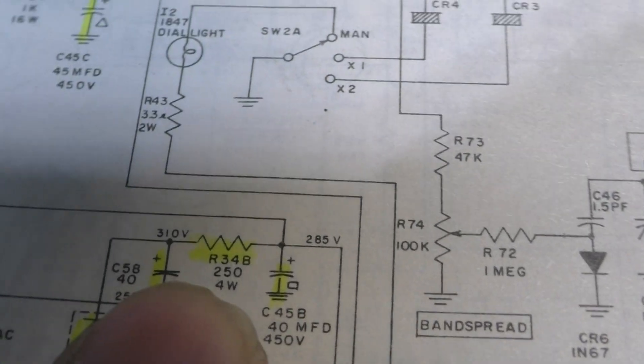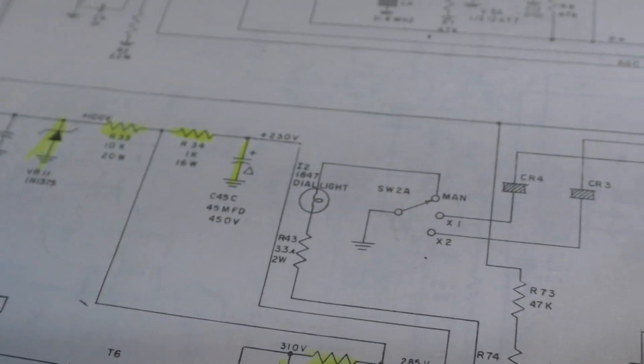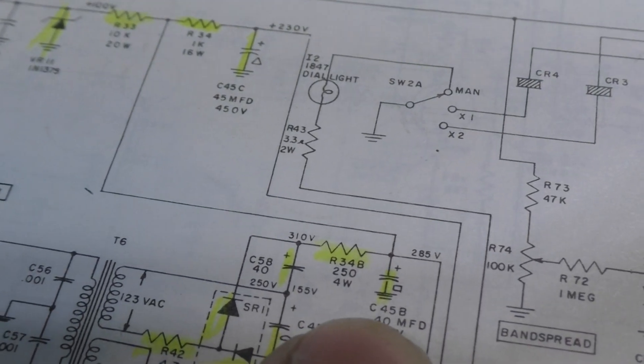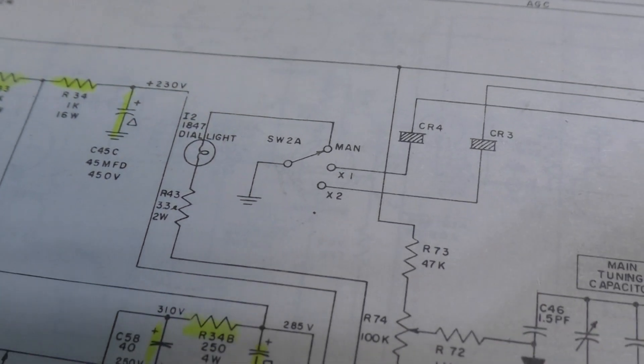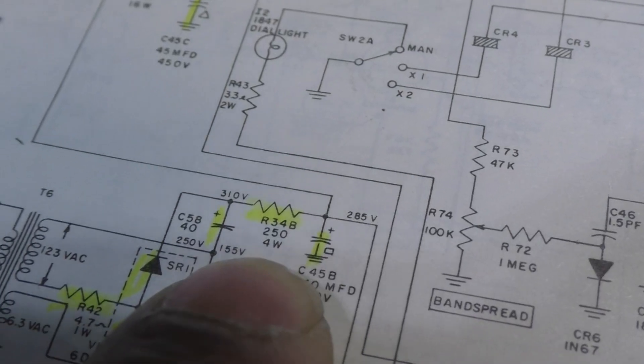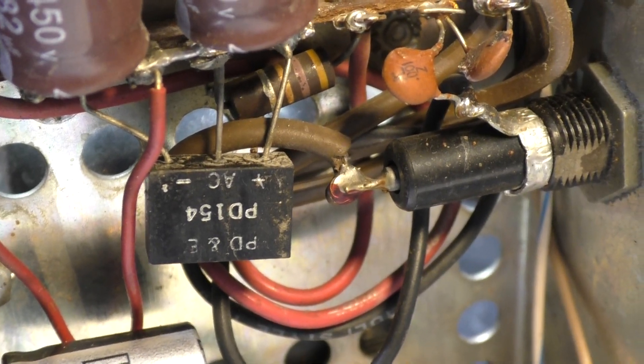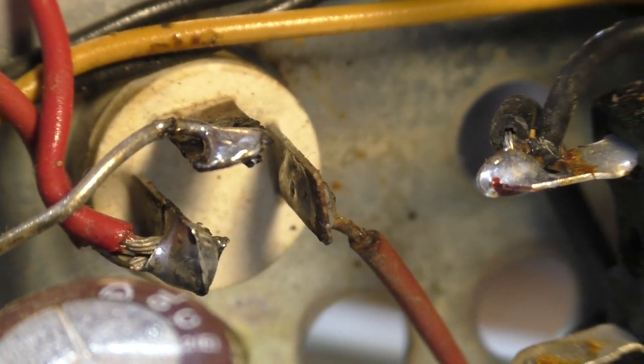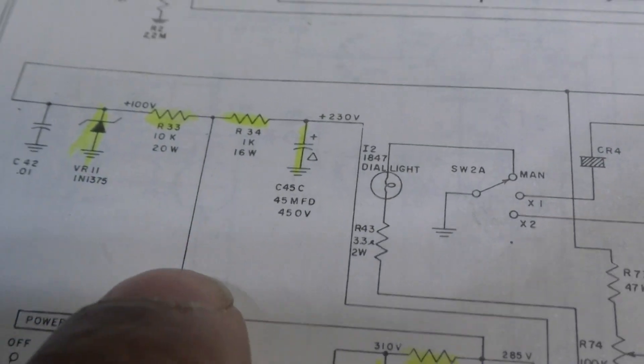There's another dropping resistor, R34B, and then another cap that drops some of that voltage down for the receive level, and then it's filtered again. That's that big cylindrical resistor right there. That's actually two resistors in one body, just like the diode was two diodes in one unit, one body. All that is is two resistors in one unit. One of them is that R34B, that 250 ohm four watt dropping resistor.